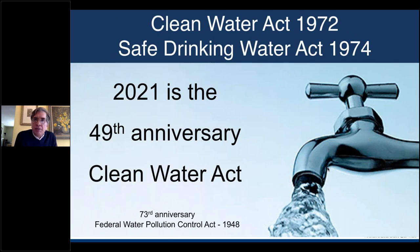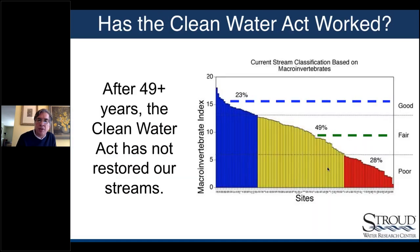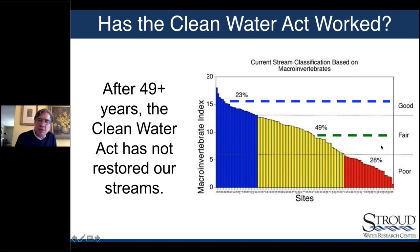How do we get here? The Clean Water Act — this is the 49th anniversary — was actually an amendment to the 1948 Federal Water Pollution Control Act, making it our 73rd anniversary. The most common question I get is: has the Clean Water Act worked? The goal was to have all sites in the good category by certain deadlines — deadlines we've blown right past. Obviously, many sites aren't in the good category, and a lot aren't even in the fair range. After 48 or 49 years, the Clean Water Act hasn't fully restored our streams.